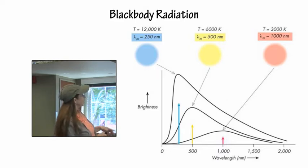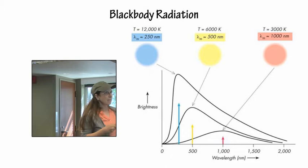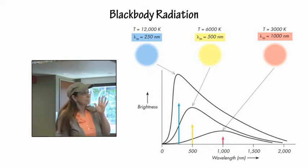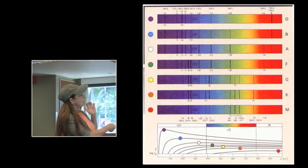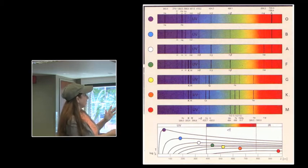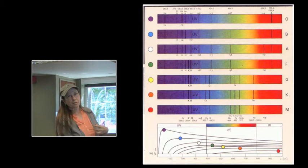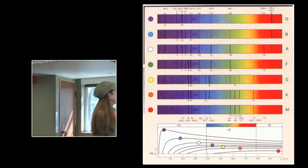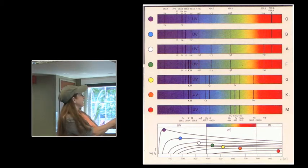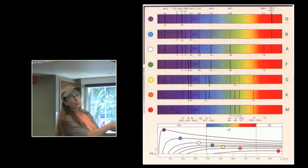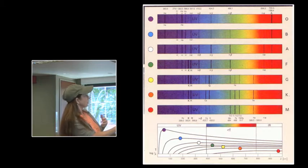Every single thing generates at a maximum wavelength that produces most of its radiation at. For the OBA stars, the maximum wavelength is in the ultraviolet part of the spectrum. The FGK stars are in the visible part of the spectrum. The M stars, their maximum wavelength is in the infrared part of the spectrum, but even though something has its maximum wavelength in the ultraviolet, it still produces radiation in the optical part of the spectrum, and that is the part we see with our optical telescopes.